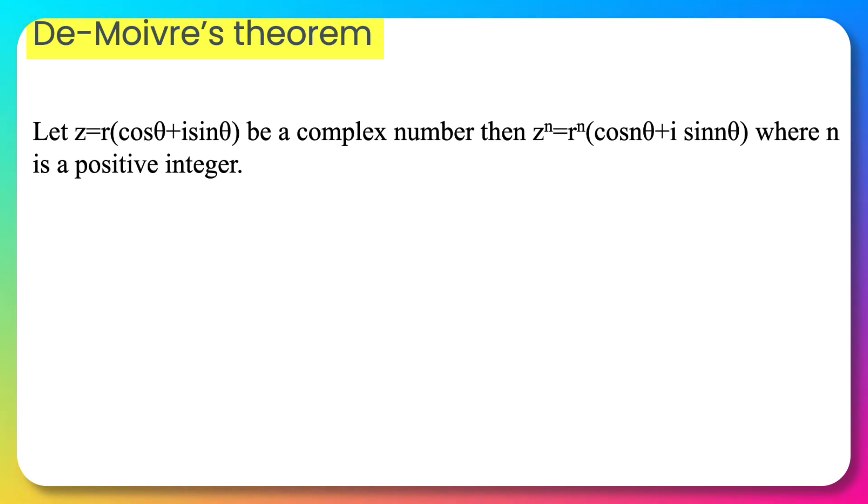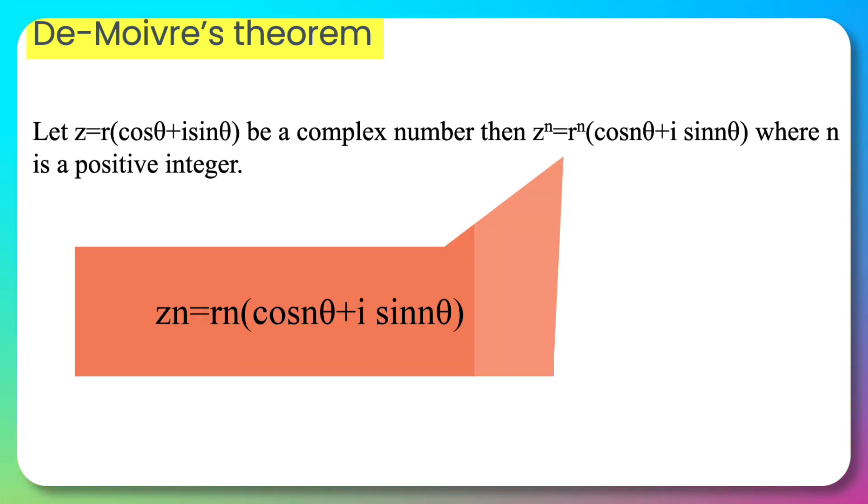On your screen you can see the statement of De Moivre's theorem, which states that for any complex number z in the polar form r(cos θ + i sin θ), raising it to the power n equals r^n times (cos nθ + i sin nθ).